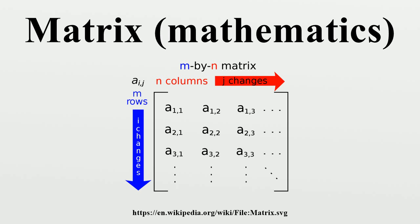Matrices and matrix multiplication reveal their essential features when related to linear transformations, also known as linear maps. A real M by N matrix A gives rise to a linear transformation from R^n to R^m, mapping each vector X in R^n to the product AX, which is a vector in R^m. Conversely, each linear transformation f from R^n to R^m arises from a unique M by N matrix A. Explicitly, the entry of A is the i-th coordinate of f(e_j), where each e_j is the unit vector with 1 in the j-th position and 0 elsewhere.